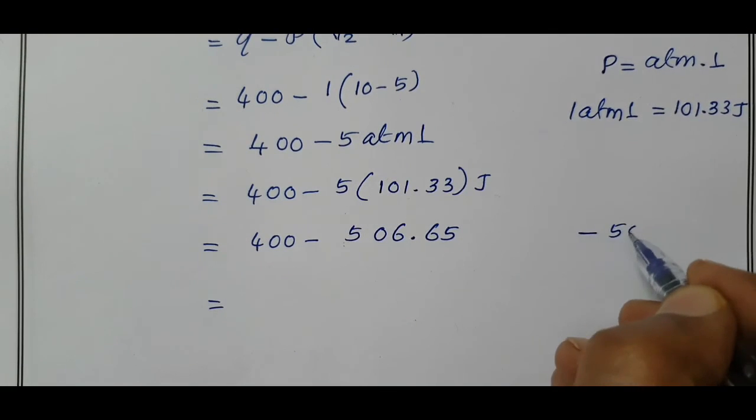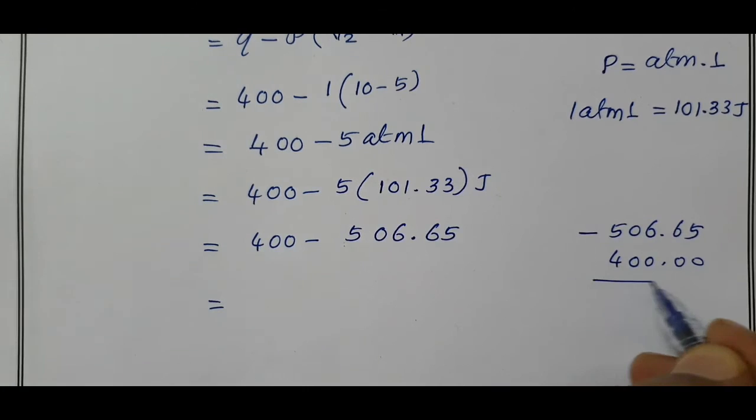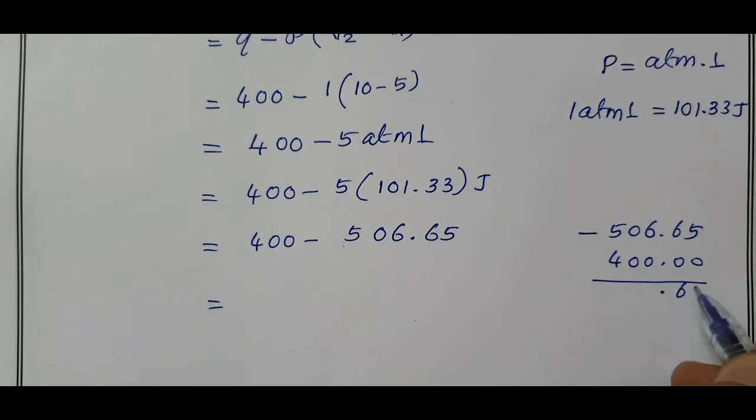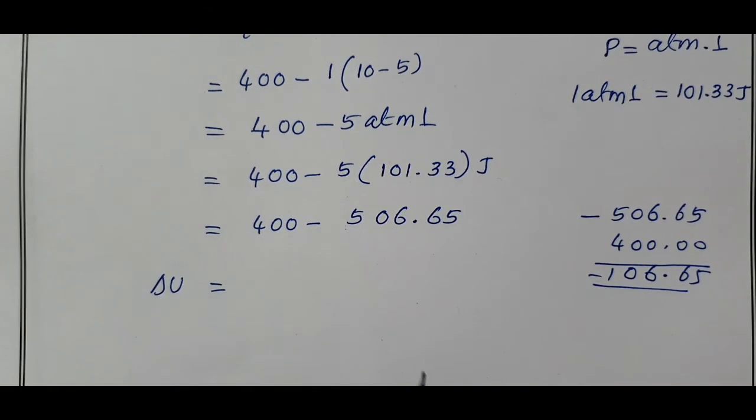Minus 506.65 from 400. Internal energy change delta U is equal to minus 106.65 Joules.